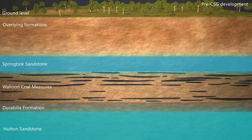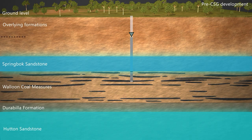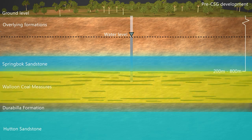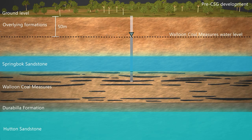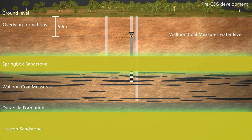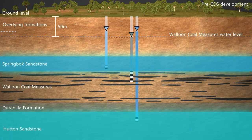Groundwater in deeper aquifers of the Surat Basin is under pressure. For this reason, when a water bore is drilled, water rises to a level somewhere above the aquifer. The level it rises to is called the bore water level, also referred to as the groundwater level in the aquifer. In the Surat Basin within the CSG development area, the top of the Walloon coal measures is 200 to 800 metres below ground, but the water level is generally about 50 metres deep. Water levels in the Springbok and the Hutton Sandstones, the aquifers above and below this coal formation, are generally about 30 metres below ground.